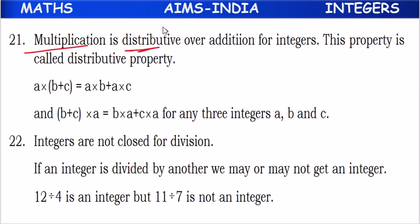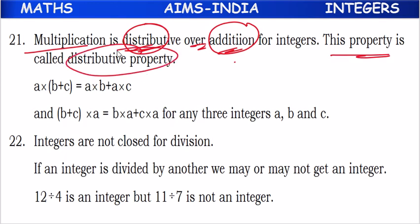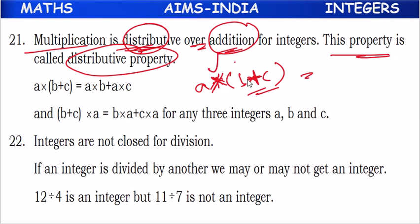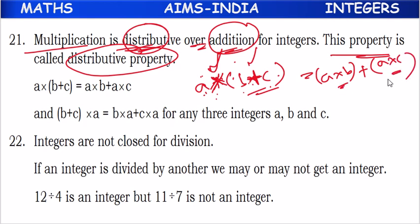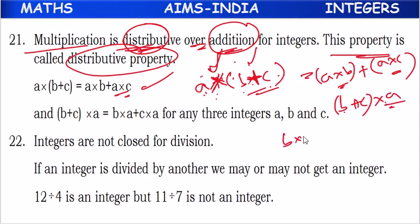Multiplication is also distributive over addition — this property is called the distributive property. So a times (b plus c) can be written as a times b plus a times c. The multiplication is distributed to both terms over addition. Or if we have (b plus c) times a, then it equals b times a plus c times a.